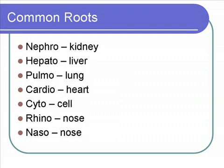Now we're moving on to roots — these are sort of the meat of words. The first one is 'nephro,' meaning kidney. An example would be nephritis, which is an infection of the kidney. 'Hepato' means liver. Hepatitis is the first thing that comes to mind — a disease or infection of the liver. You can actually get hepatitis vaccinations now, so not a bad thing to get.